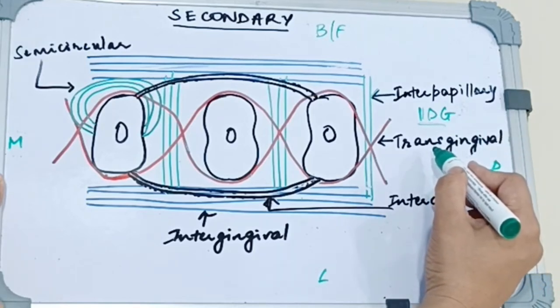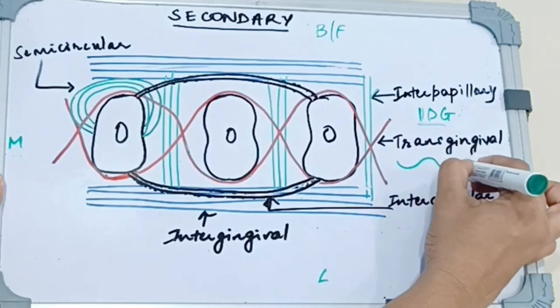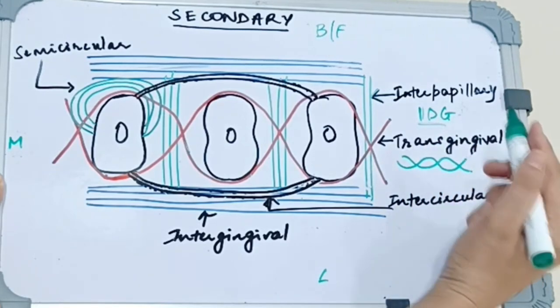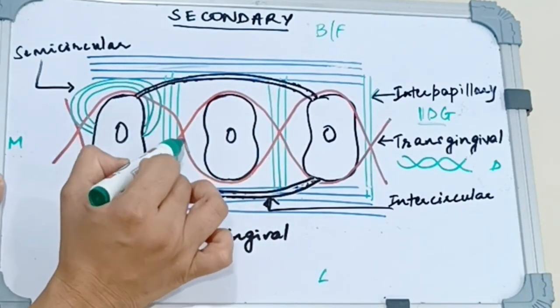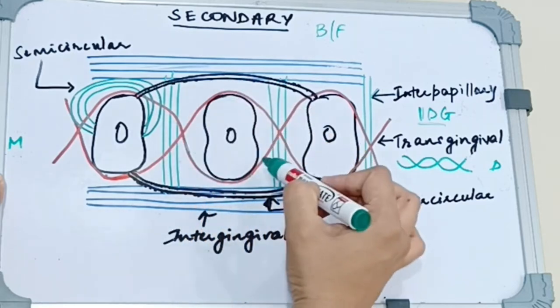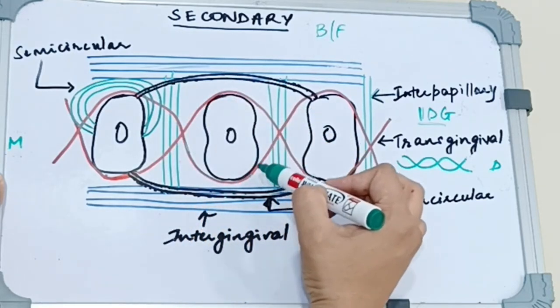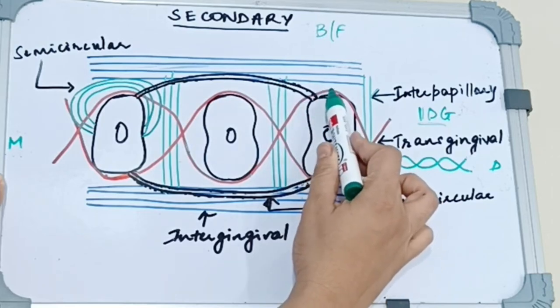Next we have the transgingival fibers. Transgingival fibers follow an S shape pattern. What they do is they attach the proximal surface of one tooth, traverse the interdental space, go around the buccal or the lingual surface of the adjacent teeth, again traverse the interdental space and attach the proximal surface of the next tooth.